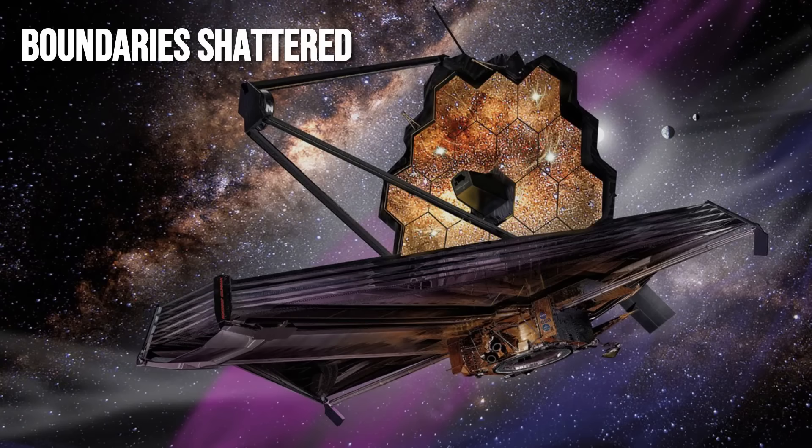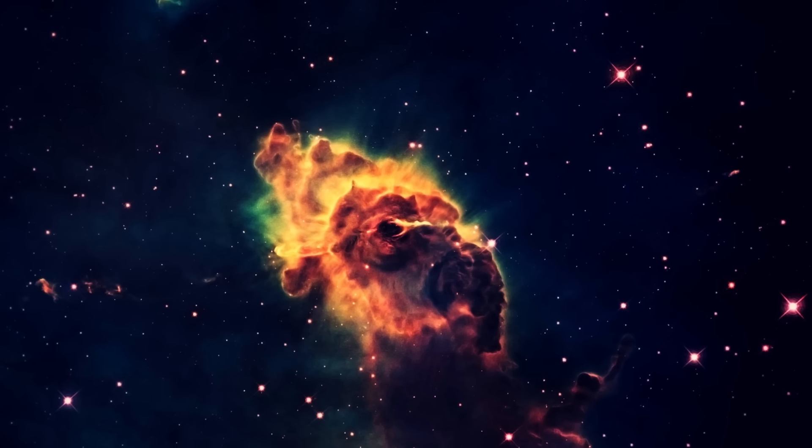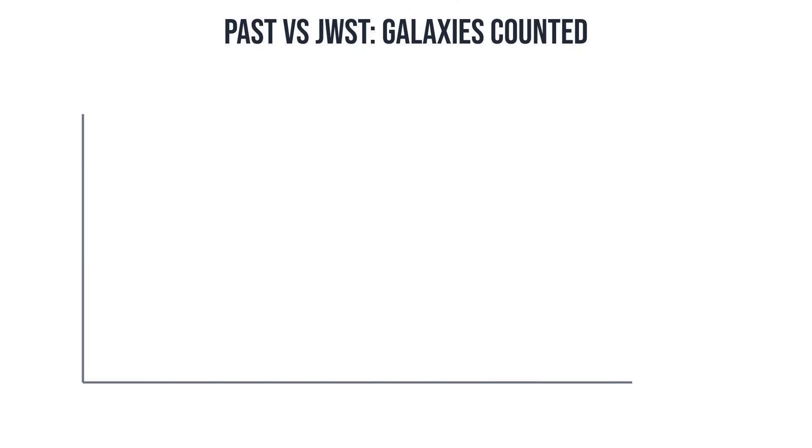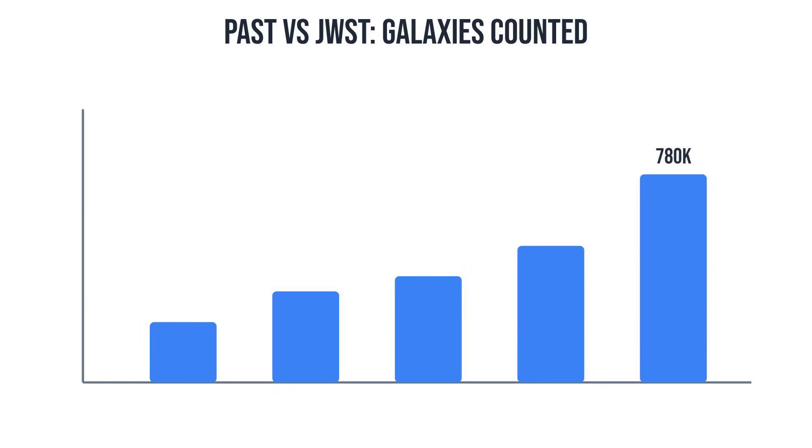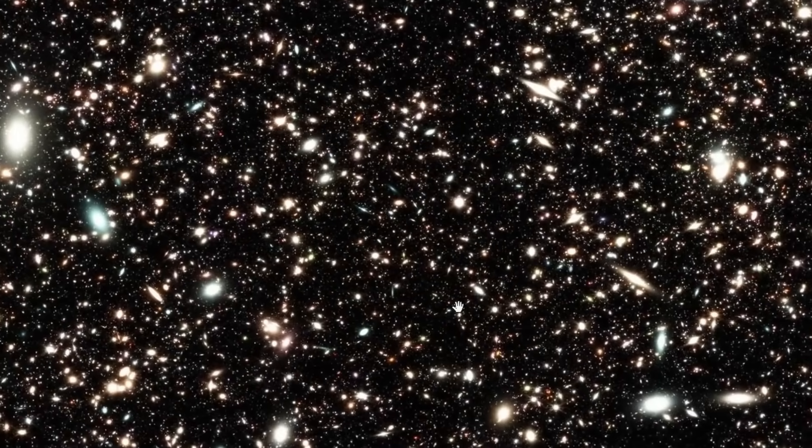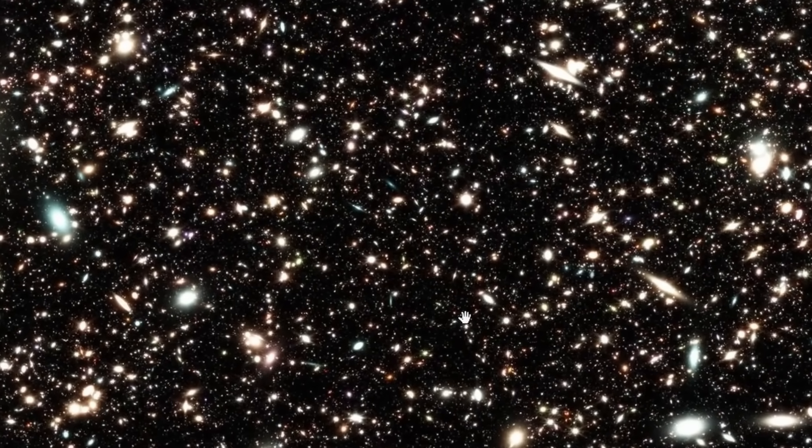Now, the James Webb Space Telescope has shattered those boundaries. In a single 250-hour campaign, Webb's Cosmos Webb Mosaic revealed not 10,000 but nearly 780,000 galaxies across a patch no bigger than three full moons, stretching back 13.5 billion years.